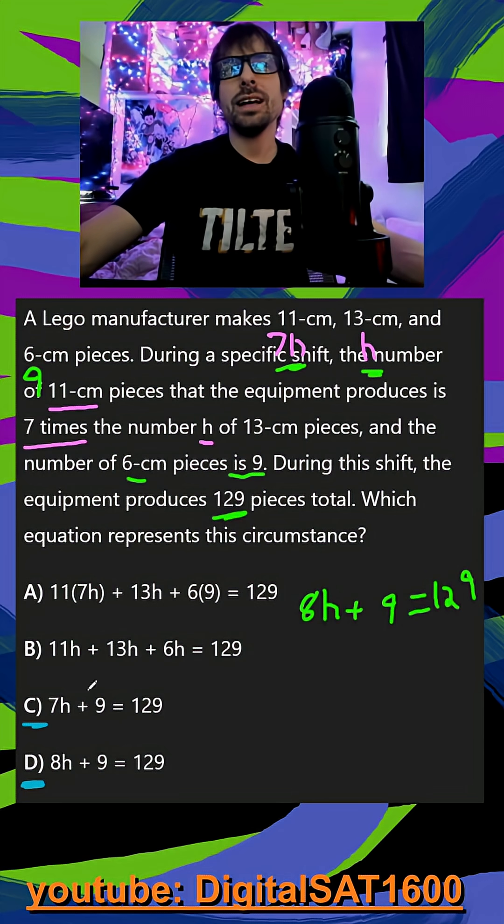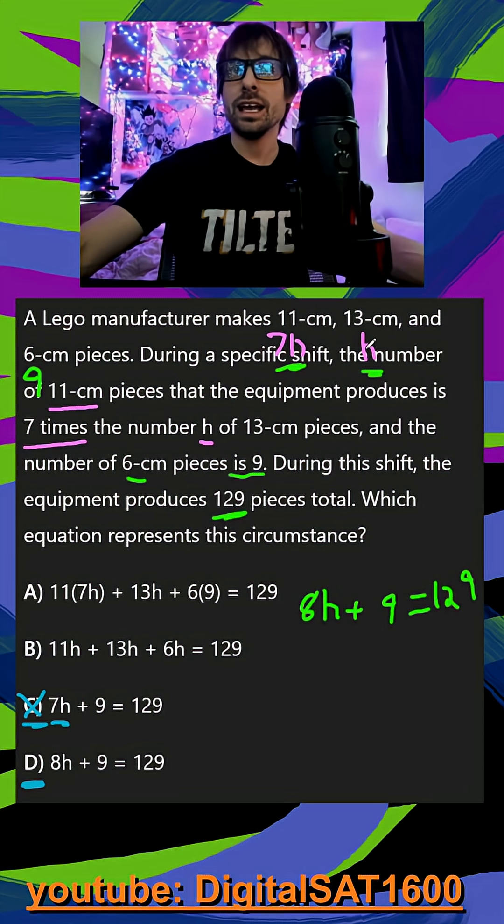In C, you might see the 7 times the number H and think, well, I see 7H, that could work. But again, it's 7H and 1H, which should get us 8.